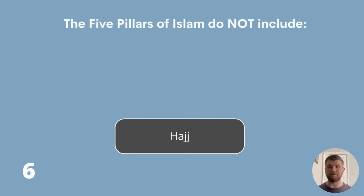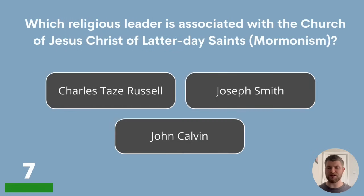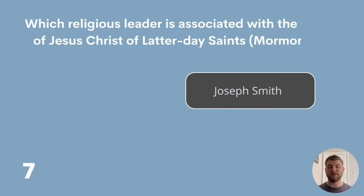Question 7. Which religious leader is associated with the Church of Jesus Christ of Latter-day Saints, or Mormonism? The answer is Joseph Smith.